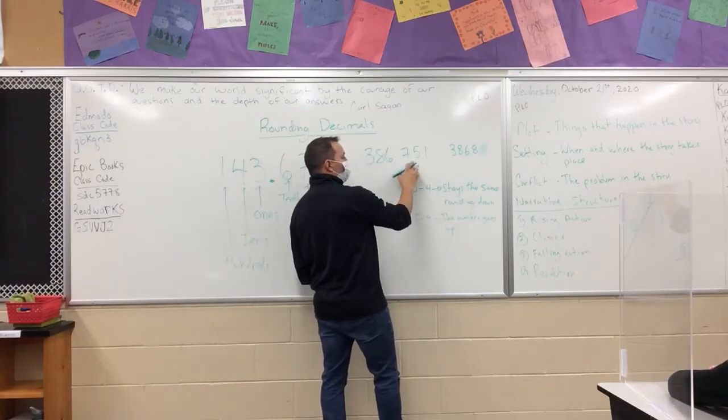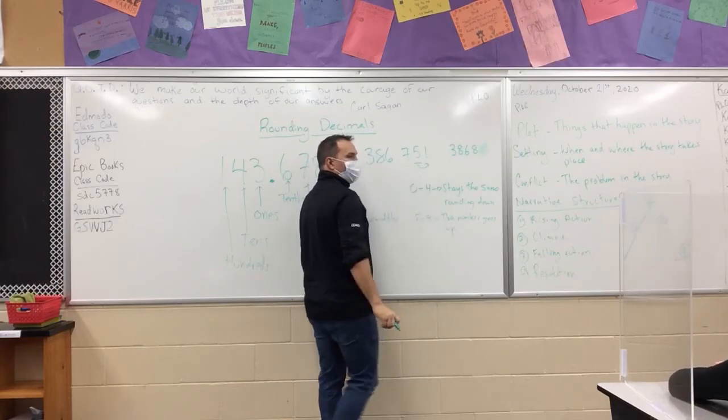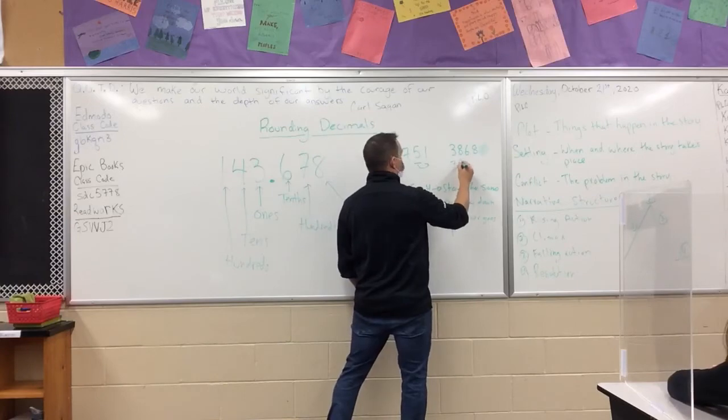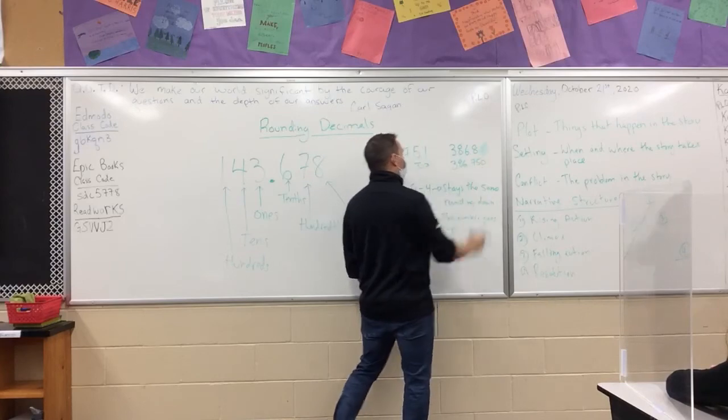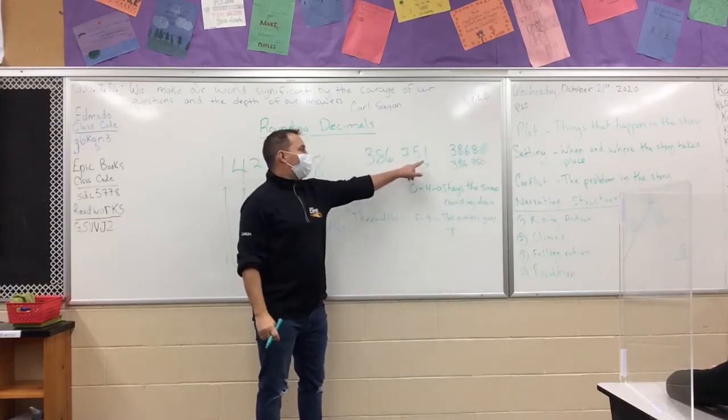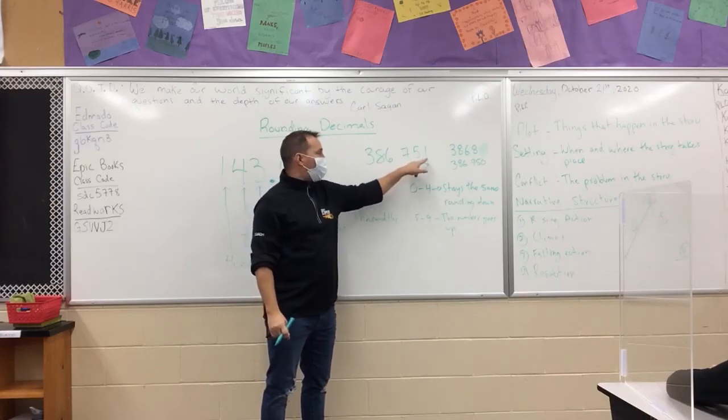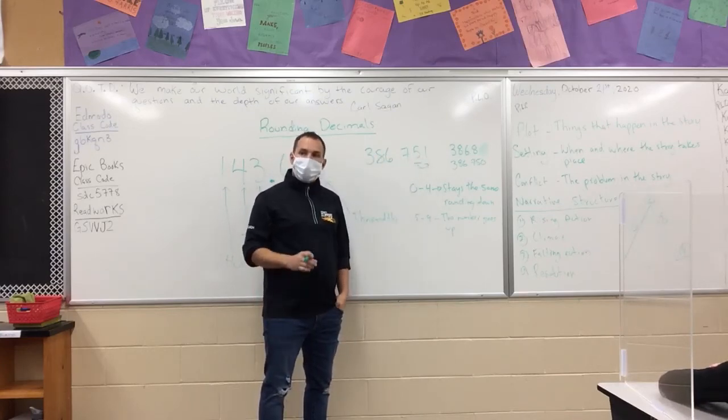So if we're rounding to the nearest hundredth, we're looking at this and beside it. 750. It becomes 386 decimal 75, or 750. Because it's a 1, so my 5 is going to stay the same. 51 gets rounded down to 50. Does that make sense for everyone?